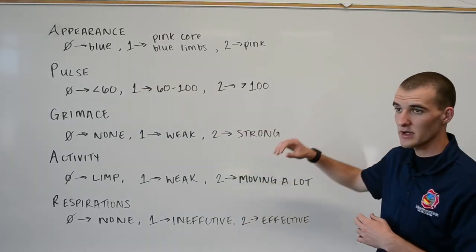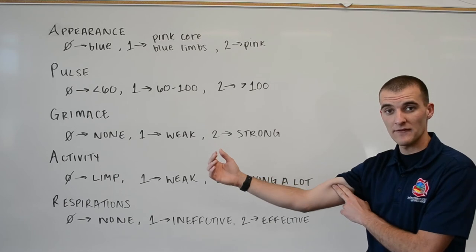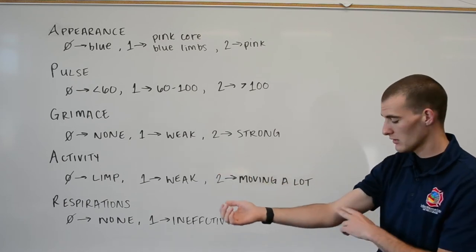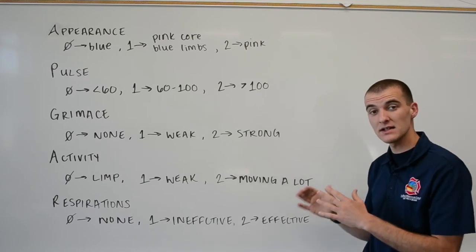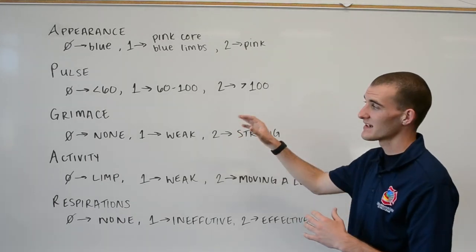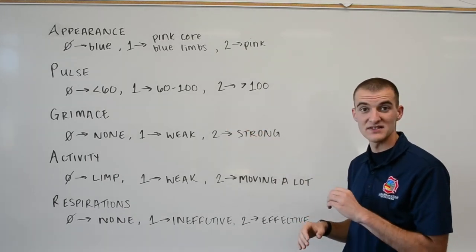So as for pulse, if you've got a pulse rate, you're going to check for any infant at the brachial site, not the radial or the carotid. If it's over 100, they're going to get a 2. Between 60 and 100, they're going to get a 1. And if it's anything less than 60, they're going to be getting a 0 for that.